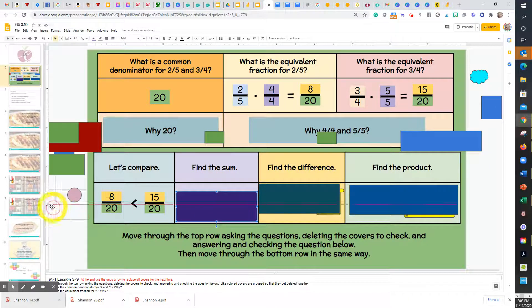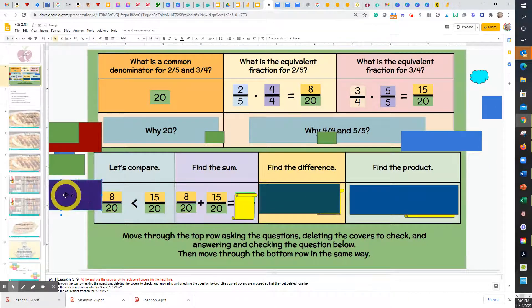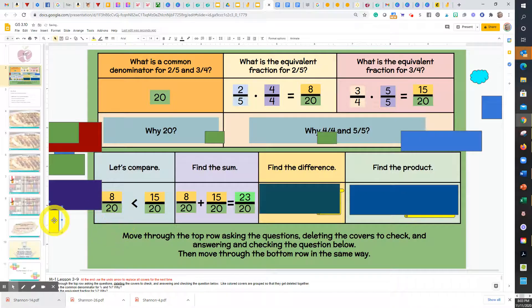Boys and girls, find the sum. There we go. Read it with me. 8-twentieths plus 15-twentieths. Think about it. Class, 23-twentieths.